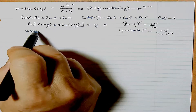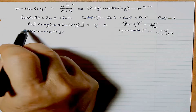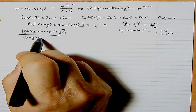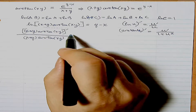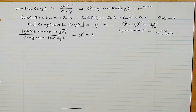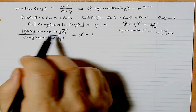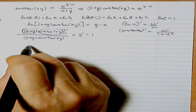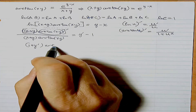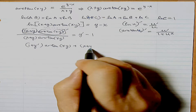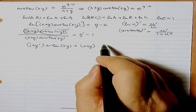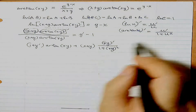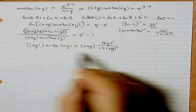The derivative of log of something is the derivative of the top divided by itself. I'll do it in two steps: [(x+y) arctan(xy)]' divided by (x+y) arctan(xy), equal to the right-hand side whose derivative is y' - 1. Now the numerator is a product, so using product rule: the derivative of (x+y) is (1 + y') times arctan(xy), plus (x+y) times the derivative of arctan(xy), which is (xy)' / (1 + (xy)²), all divided by (x+y) arctan(xy).